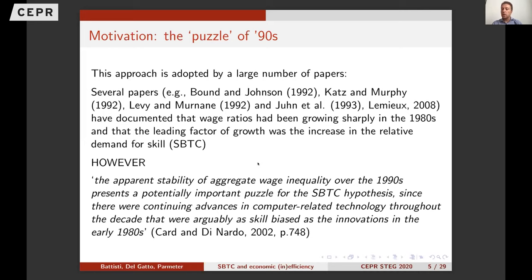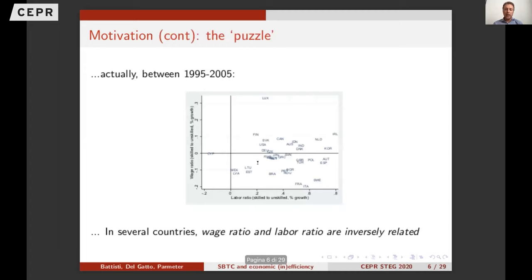This is a sort of puzzle for the skill-biased technical change hypothesis — in some sense a Solow paradox in relative terms — because we continue to see advances in computer-related technology that we expect are skill-biased, but wage inequality does not move anymore. In order to detect skill-biased technical change with the traditional approach in this scenario, we would need a relevant inverse change in relative skill supply, but this is not supported for many countries after the 90s.